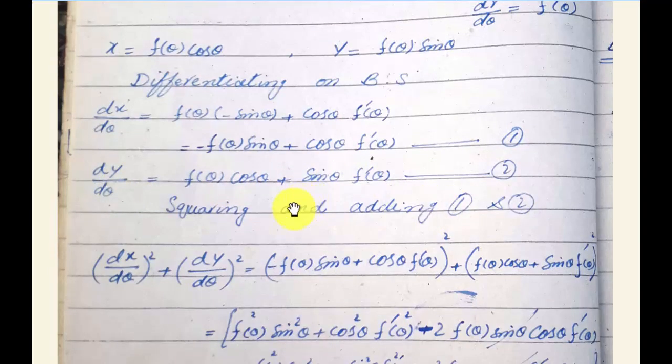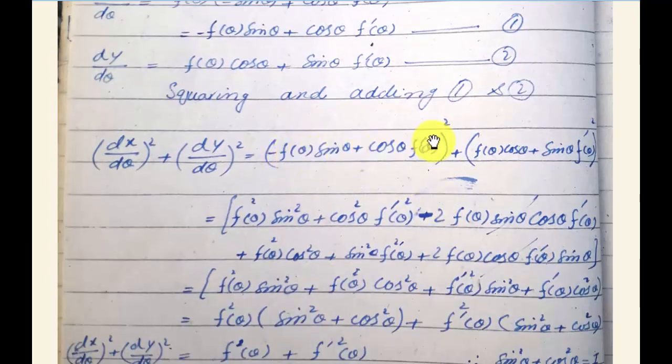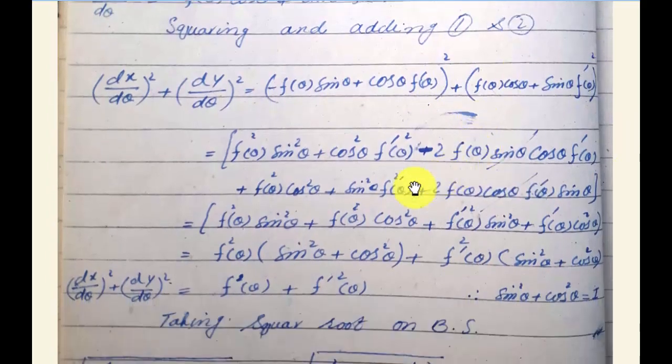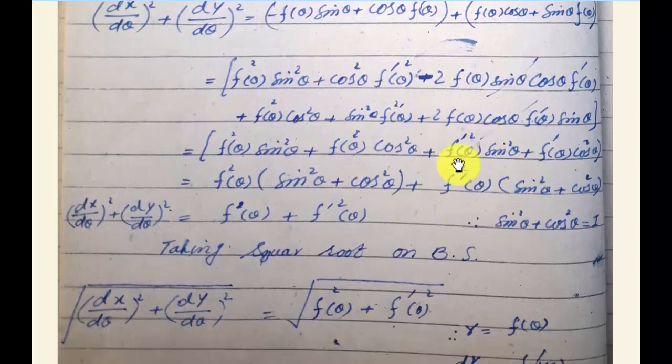We square and add equations 1 and 2. This is (dx/dθ)² + (dy/dθ)². We square both expressions and add them. When you do this, the squares open up and the values come out. You will be able to solve it.